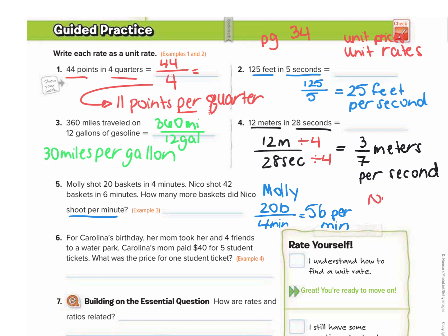Nico shot 42 baskets in six minutes. So he shot seven baskets per minute. It says how many more baskets did Nico shoot per minute. So we do seven baskets minus five baskets, which means two baskets more per minute. So whenever it says how many more, that usually means to do subtraction.